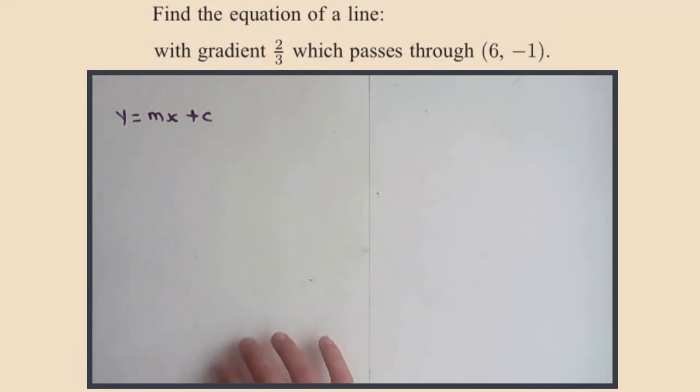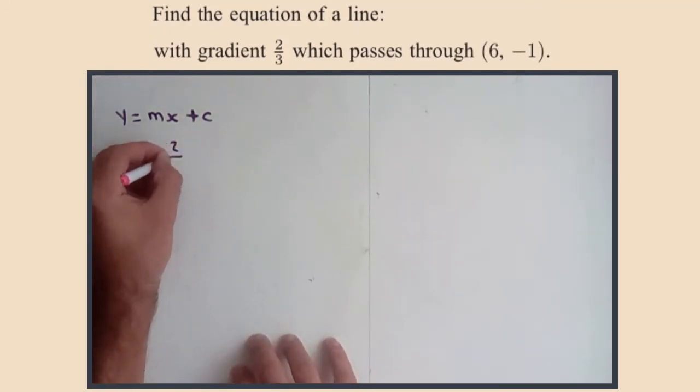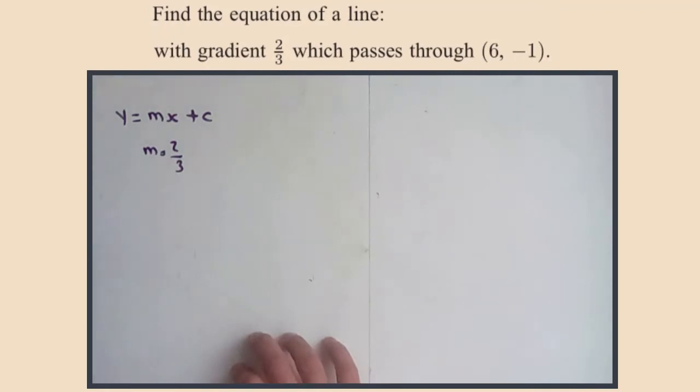Right, so what we know: we know that the gradient is m, so we know that m equals two-thirds. We don't know what c is, but we do know a point on the line.